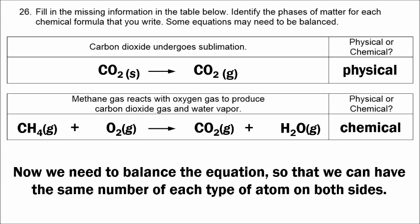To balance the equation, we have four hydrogens on the left, so we put a 2 in front of the water, giving us four hydrogens on the right. That gives a total of four oxygens on the right side altogether, so we put a 2 in front of the O2, giving us four oxygens on the left. The equation is now balanced.